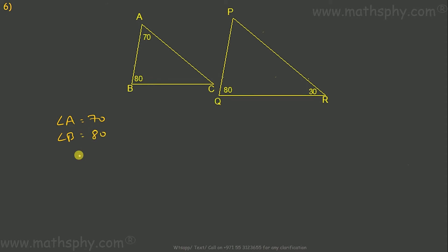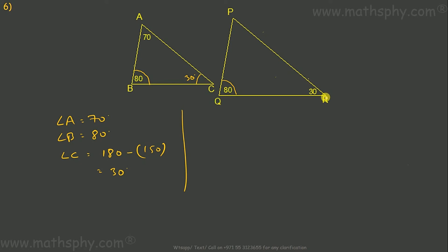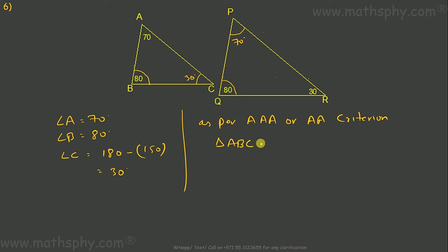For the sixth pair: angle B is 80° and angle C — since 80 plus 70 is 150, angle C is 180 minus 150, which is 30 degrees. We can see angle B equals angle Q and angle C equals angle R. This angle would also be 70 degrees. So as per the Angle-Angle-Angle (AAA) or Angle-Angle (AA) criteria, triangle ABC is similar to triangle PQR.